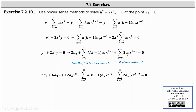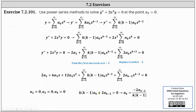Re-indexing the right power series by replacing k with k−5 gives the sum from k = 5 to infinity of 2a_(k−5) x^(k−2). Now both sums have the lower limit k = 5 and exponent k−2. Since the entire expression equals zero, all coefficients must equal zero, so a₂ = a₃ = a₄ = 0. From the combined sum, k(k−1)a_k + 2a_(k−5) = 0, giving the recurrence relation: a_k = −2a_(k−5) / [k(k−1)].